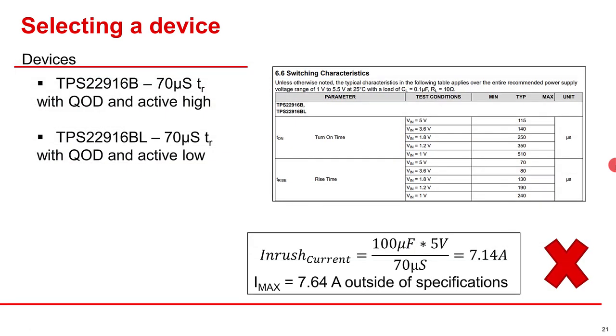When we look at the B version of the device, we notice it has a 70 microsecond rise time. So we use our inrush current calculation to determine whether it will meet our device specifications or not. With the rise time of this device, the inrush current will be at approximately 7.14 amps, which is significantly higher than the 2 amp max rating of the device. So it's not going to work.